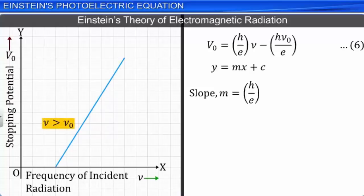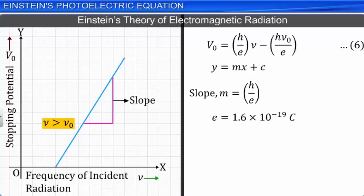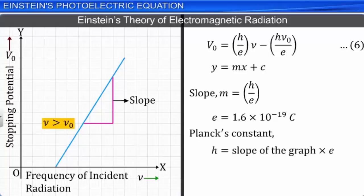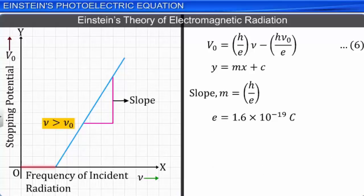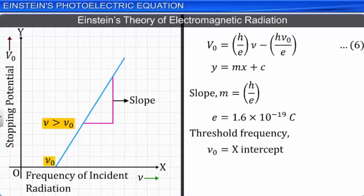Millikan performed the photoelectric effect experiment for a series of metals and found that the stopping potential V₀ varied in a linear fashion with frequency. From the slope of the stopping potential V₀ versus frequency ν graph, he determined the value of Planck's constant using the known value of charge on the electron, which is equal to 1.6 × 10⁻¹⁹ coulomb. The value of Planck's constant h is equal to the slope of the graph into the value of charge on e. The value of h is found to be equal to 6.626 × 10⁻³⁴ joule second. The intercept on the x-axis provides the value of the threshold frequency ν₀. The work function of the given metal surface φ₀ = hν₀ can be determined since we know the value of Planck's constant h.